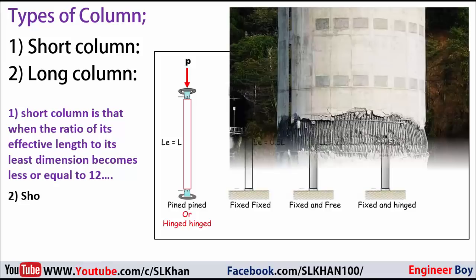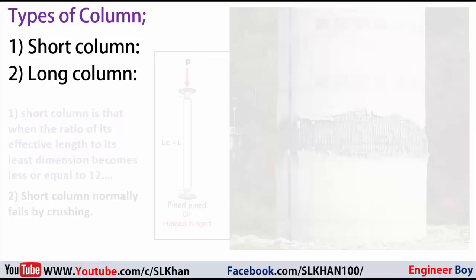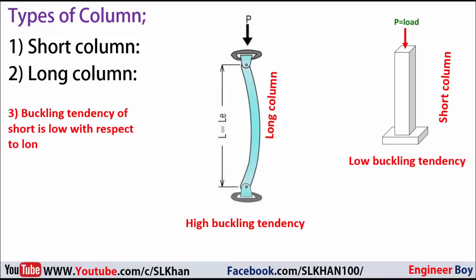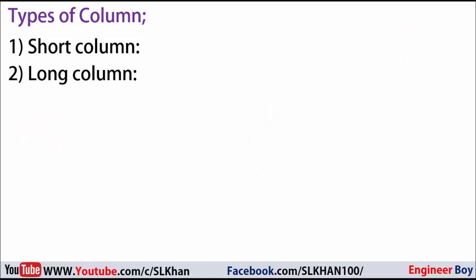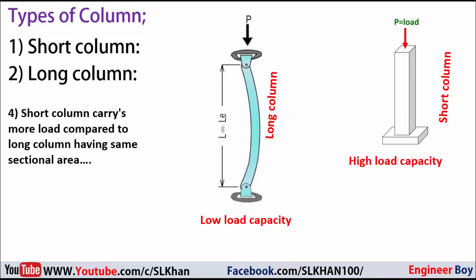Short columns normally fail by crushing. The buckling tendency of a short column is low compared to long columns. Short columns carry more load compared to a long column having the same sectional area.